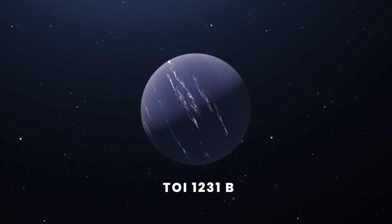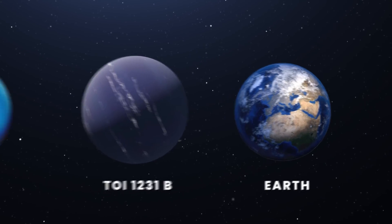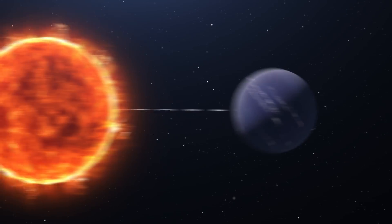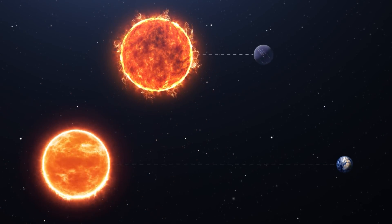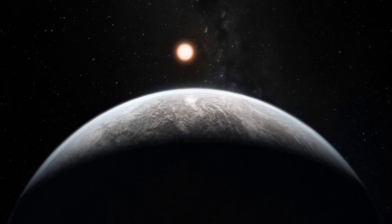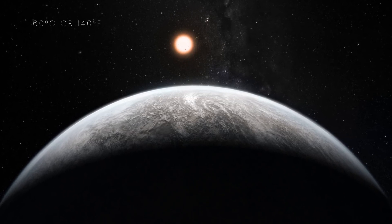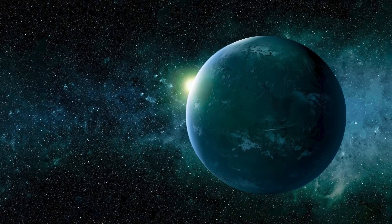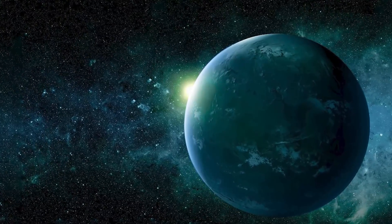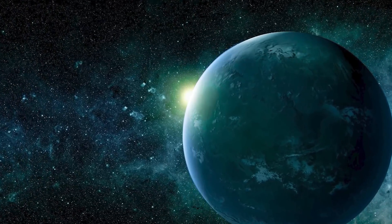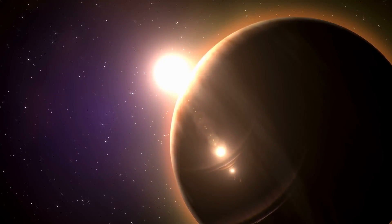TOI-1231b is a bit larger than Earth, but a bit smaller than Neptune. It's eight times closer to its star than our planet is to the Sun. The surface temperature was measured to be about 60 degrees Celsius. Even though it's too big to be habitable, it's the coolest exoplanet ever found and will be a perfect target for the study of exoplanet atmospheres.